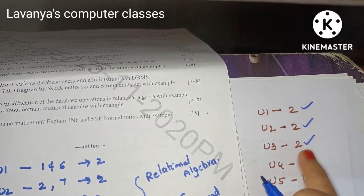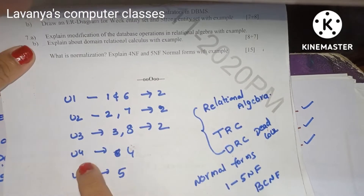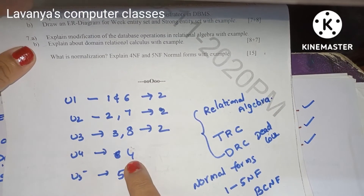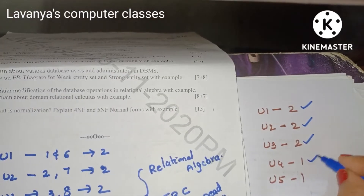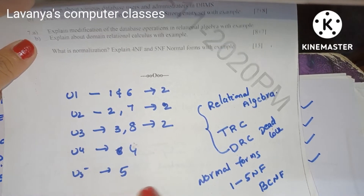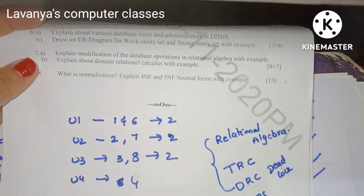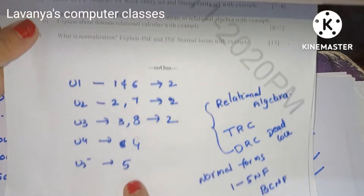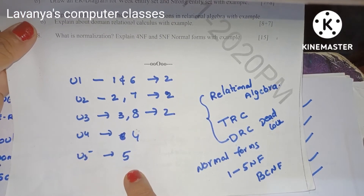Two questions came from unit 3. From unit 4, only one question came — question number 4. From unit 5, only one question came — linear hashing insertion and deletion operation. So out of 5 units: unit 1 has 2 questions, unit 2 has 2 questions, unit 3 has 2 questions, unit 4 and unit 5 have only 1 question each — 8 questions total.